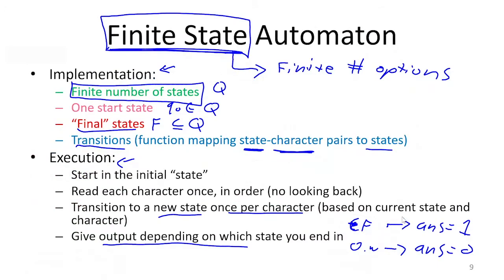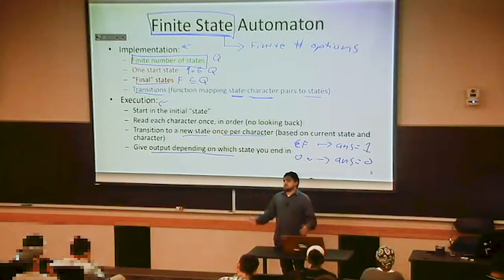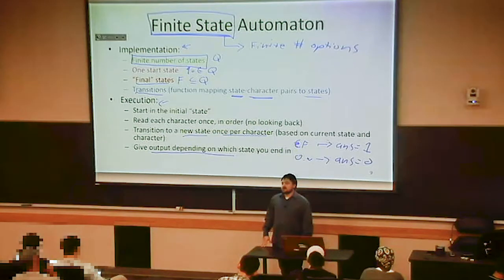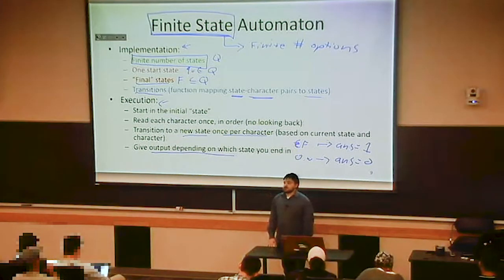This rule that we describe here for an execution, there's kind of this for loop where the number of iterations that for loop is going to go is however many bits were given as the input, or however many characters were given as the input. For each character, you're going to do this thing. It's going to do more things if you give it more characters.